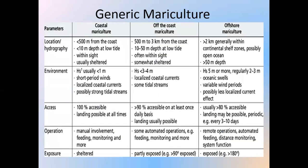If you look at this picture, you can identify the generic mariculture. Generally, generic mariculture is differentiated into three groups: one is coastal mariculture, second one is off-the-coast mariculture, and third one is offshore mariculture. Different types of parameters are followed when different types of generic mariculture are applied in different regions of India.